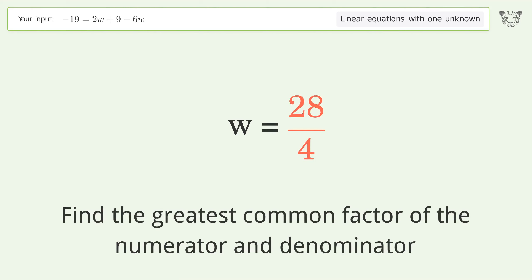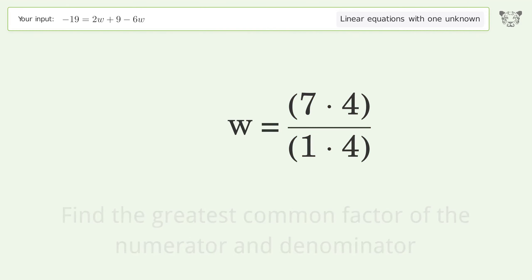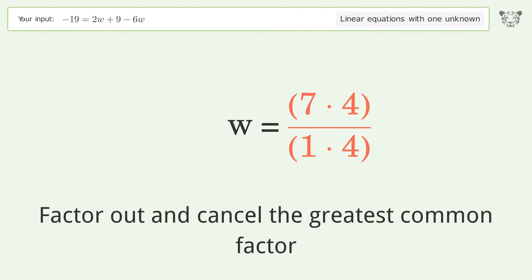Find the greatest common factor of the numerator and denominator. Factor out and cancel the greatest common factor.